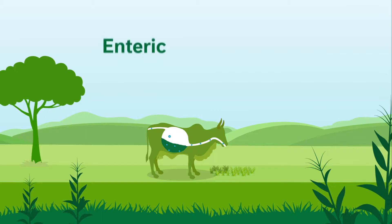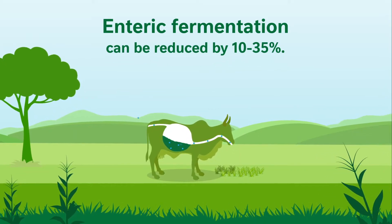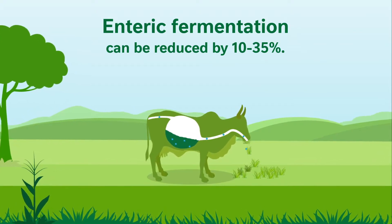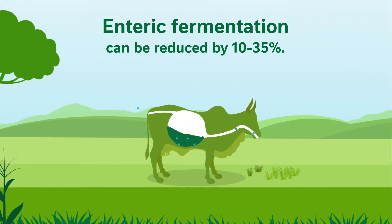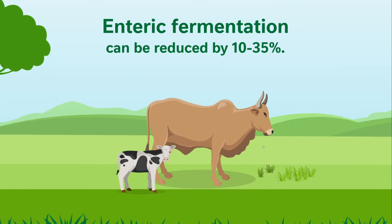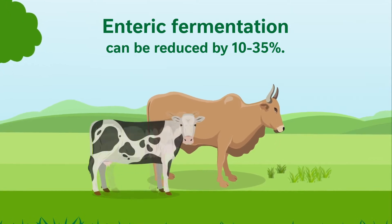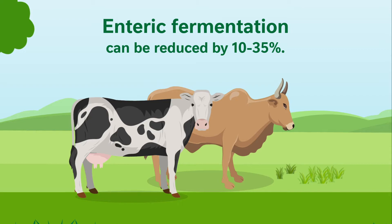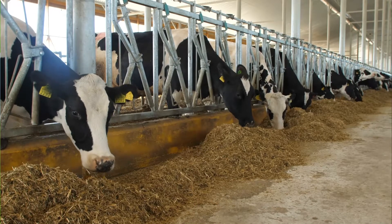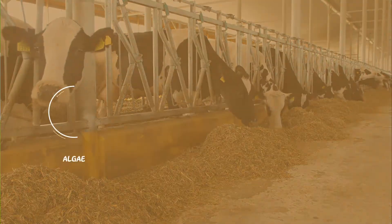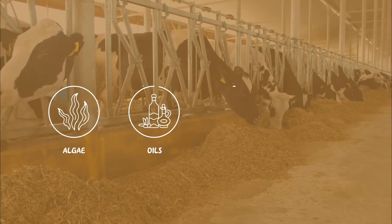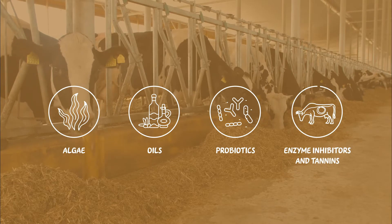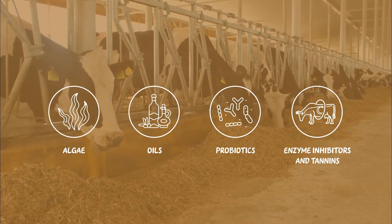It is estimated that methane emissions from enteric fermentation can be reduced by 10 to 35 percent. Measures include improved feed digestibility, breeding for reduced methane emission, and healthier and more productive cows. Further measures may include feed additives such as algae, oils, probiotics, prebiotics, plant extracts, enzyme inhibitors, and tannins.